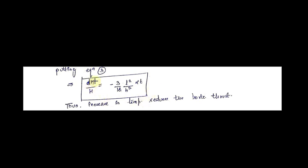If you see this equation, it comes out to be negative. This means whenever there is an increase in temperature, the horizontal thrust decreases, and the decrease in the horizontal thrust can be found by this equation after putting in all the values.